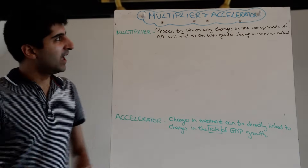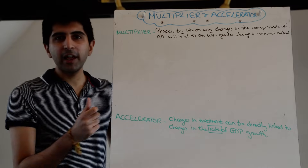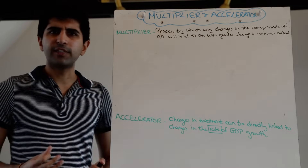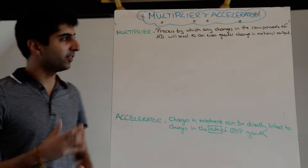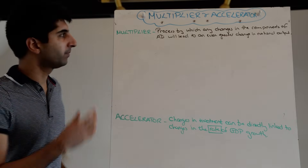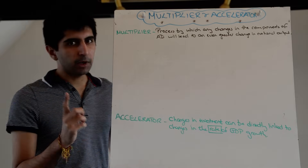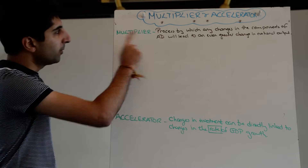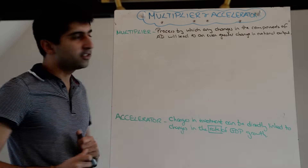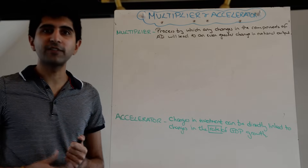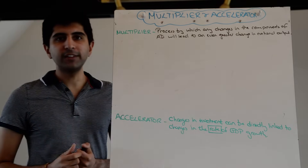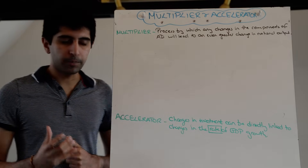Hi everyone. The multiplier and accelerated theories — advanced theories when it comes to macroeconomics, but theories you should be able to use in your essays. Let's start by looking at the multiplier. The multiplier is a process by which any changes in the components of aggregate demand will lead to an even greater change in national output.